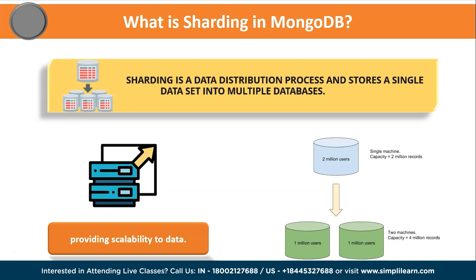For example, say I have a database with 2 million users running frequently. A single machine has a capacity to hold 2 million records. If my business grows and data increases — say from 2 million to 3 million — operations on that database can be quite difficult due to the huge traffic. In that case, I can split the database into two different instances with two different servers. Dividing 2 million into 1 million and 1 million, each with a capacity of 2 million, gives a total capacity of 4 million. This is what sharding is based upon.